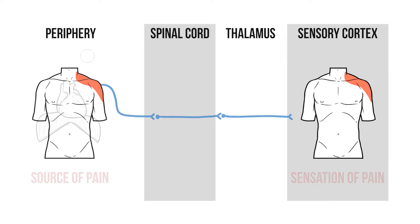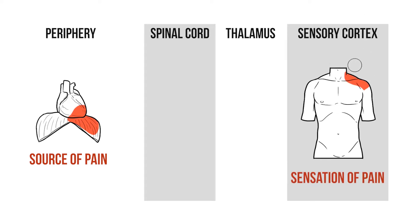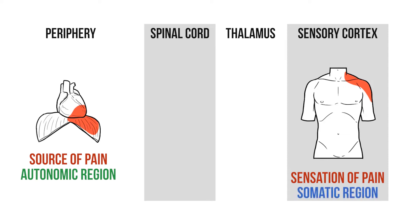With referred pain, this process goes awry. Pain signals leave one part of the body, but by the time those signals reach the brain, it thinks they've come from somewhere else. Typically, this pain originates in an autonomically innervated structure, such as an organ. However, the sensation of pain is referred to a somatically innervated region, such as a dermatome.